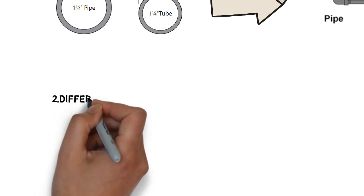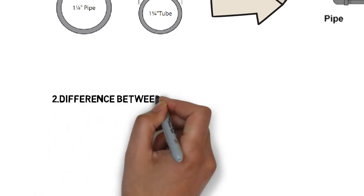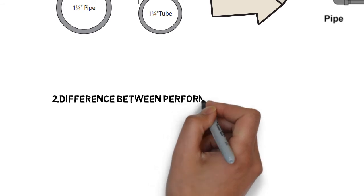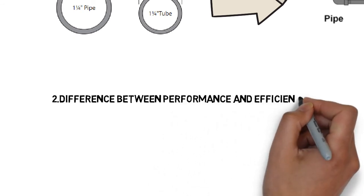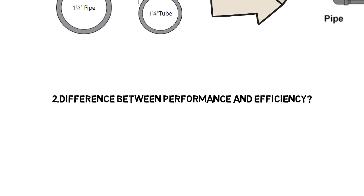2. Difference between performance and efficiency. Answer: The accomplishment of a given task measured against preset known standards of accuracy, completeness, cost, and speed is called performance.